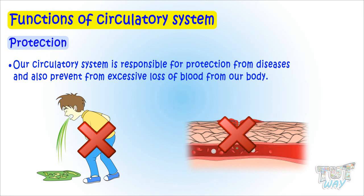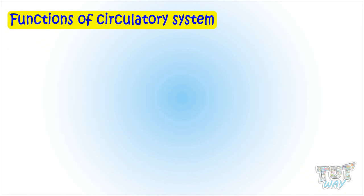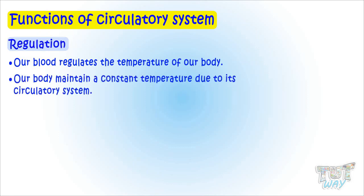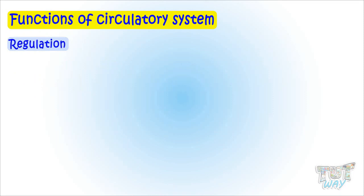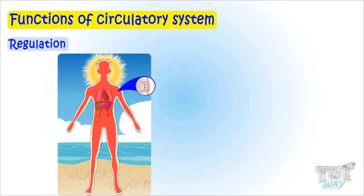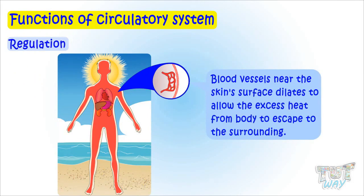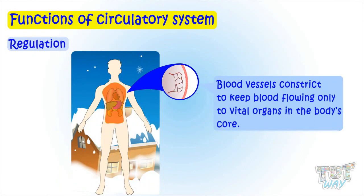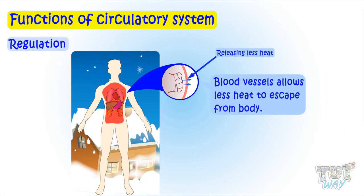The next very important function of our circulatory system is regulation. Our blood regulates the temperature of our body. Our body maintains a constant temperature due to its cardiovascular system. When the weather is very hot, the blood vessels near the skin surface dilate to allow excess heat to escape to the surroundings. And when it's too cold outside, the blood vessels constrict to keep the blood flowing only to vital organs and do not let much heat escape from the body. This is how our blood regulates body temperature.